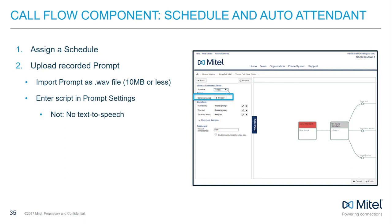Once the prompt file is uploaded, click on the file name to review or edit it at a later time. Click the word bubble to reveal the text box where you can enter the prompt script — note this text box does not do text-to-speech and is meant for notating the prompt script for reference. Enter a time amount for timeout in milliseconds, such as 8,000, giving callers 8 seconds to enter a digit before the timeout condition is met.